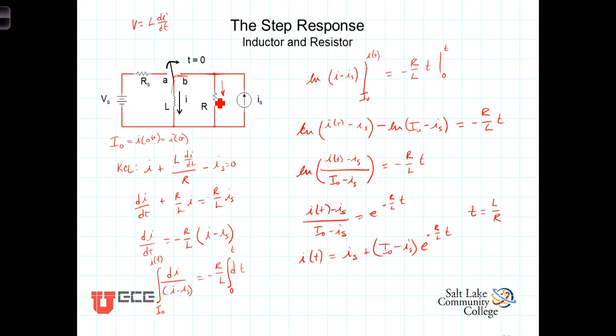At that point, there will be no voltage across this resistor, so there will be no current going through it, and all of this source current will be flowing through the inductor. In other words, Is is the final current, or the current as t approaches infinity.